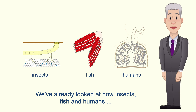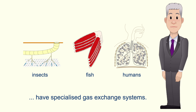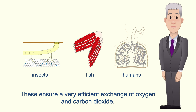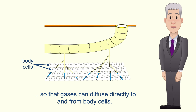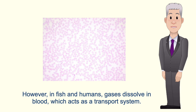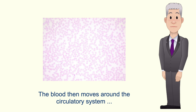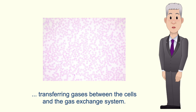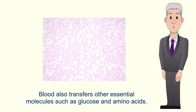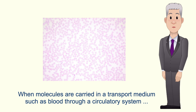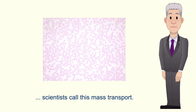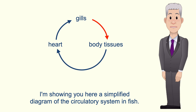Now we've already looked at how insects, fish and humans have specialized gas exchange systems. These ensure a very efficient exchange of oxygen and carbon dioxide. In the case of insects, their gas exchange system has evolved so that gases can diffuse directly to and from body cells. However, in fish and humans gases dissolve in blood, which acts as a transport system. The blood then moves around the circulatory system transferring gases between the cells and the gas exchange system. Blood also transfers other essential molecules such as glucose and amino acids. Now when molecules are carried in a transport medium such as blood through a circulatory system, scientists call this mass transport.